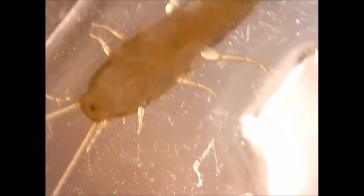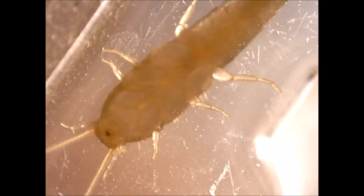Silverfish eat plant material like algae, starchy vegetables, cotton, hair, paper, and even glue.